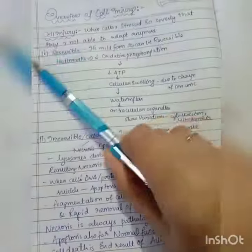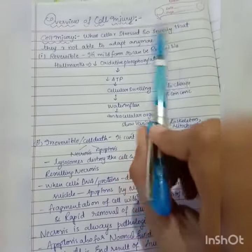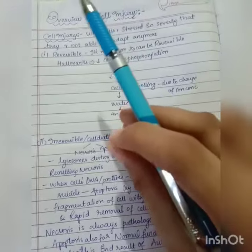Back to the channel. Now let us see the overview of cell injury. What is cell injury? It's when cells are stressed so severely that they are not able to adapt anymore.